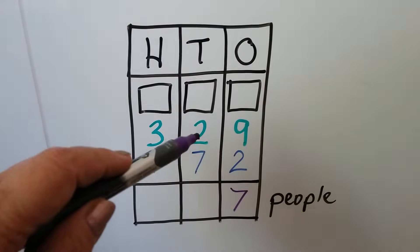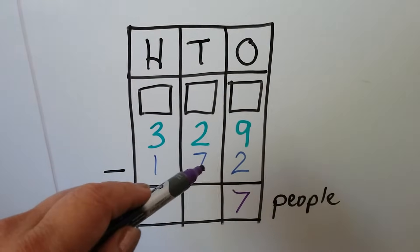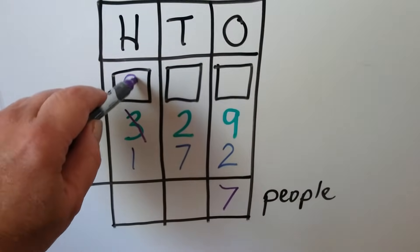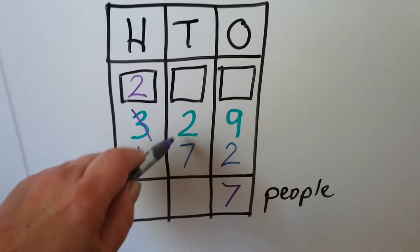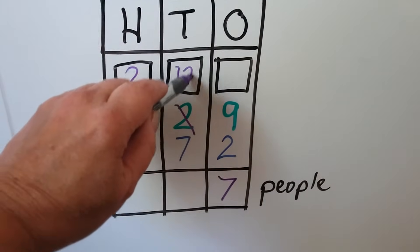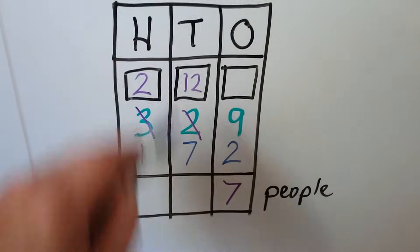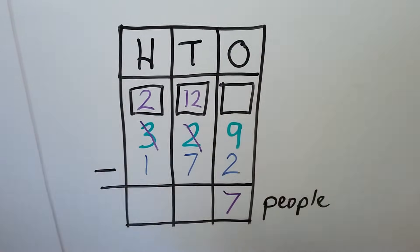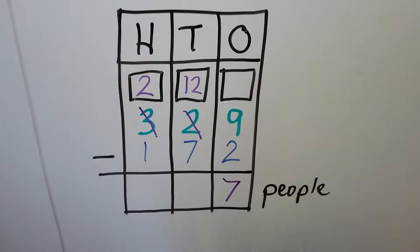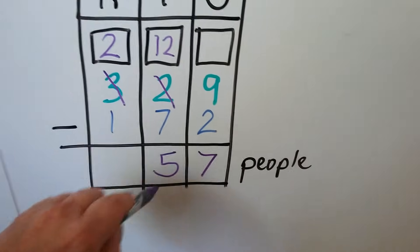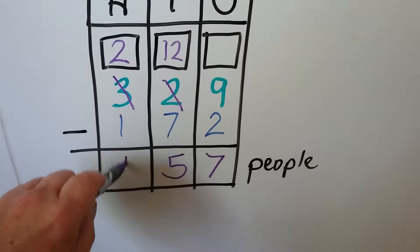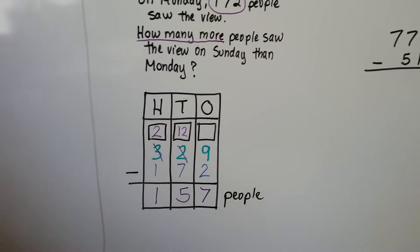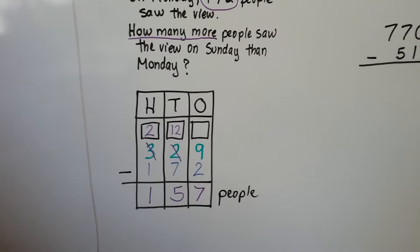In the tens place we have 2 and we need to take away 7, but we can't because 7 is too big. So we go to the hundreds place and borrow one — the hundreds digit becomes 2. That ten goes to the tens place, so 2 becomes 12 tens. 12 take away 7 is 5. Then 2 take away 1 is 1, so there were 157 more people on Sunday than Monday.